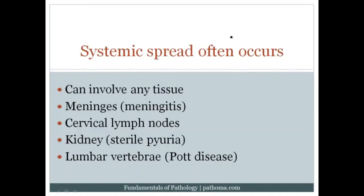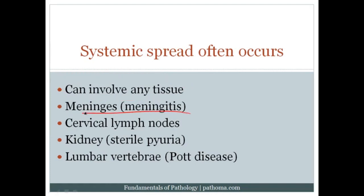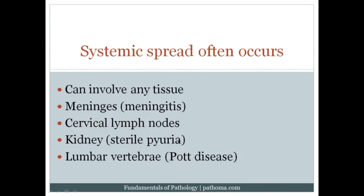TB can spread to multiple distant sites. High-yield sites include the meninges — causing meningitis with granulomas at the base of the brain — and the cervical lymph nodes. The most commonly involved organ is the kidney, producing sterile pyuria. When TB spreads to the bone, particularly the lumbar vertebral bodies, it is called Pott disease. That concludes our discussion of pulmonary infections.